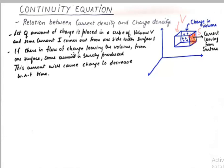Now, if there is a flow of charge leaving the volume from the surface some amount of current is surely produced. And this current will cause charge to decrease with respect to time. So this point is very important. Whenever the current flows out of the surface of this volume that will result in the decrease of charge, because eventually the charge is moving out and causing the current to be created.